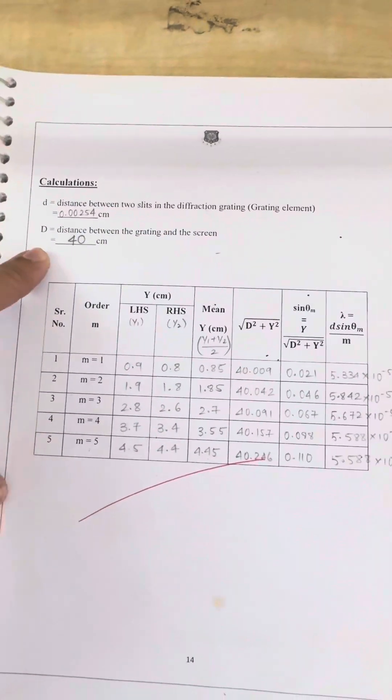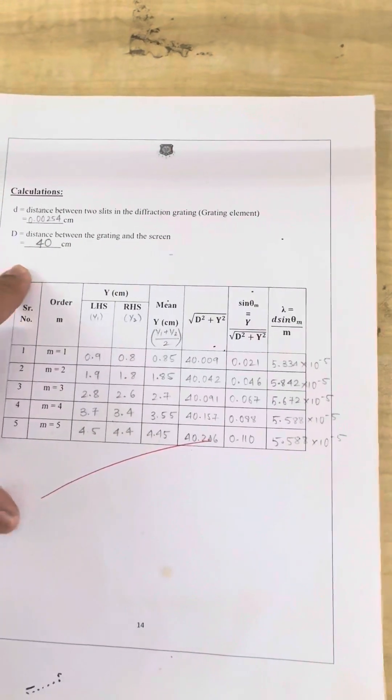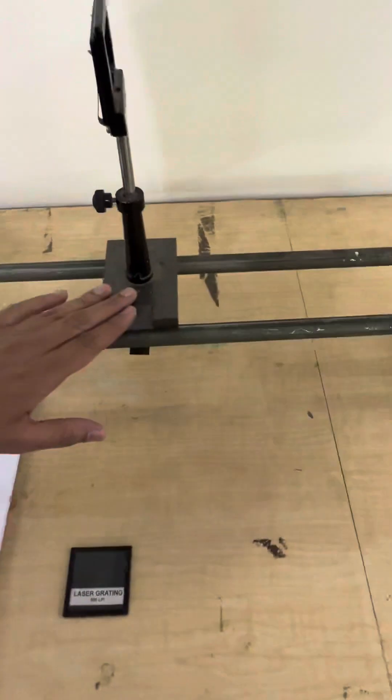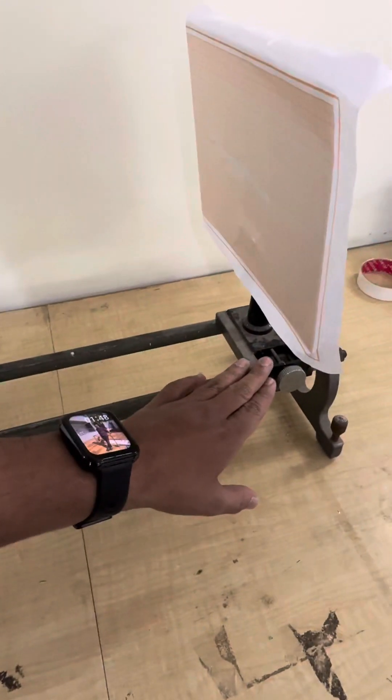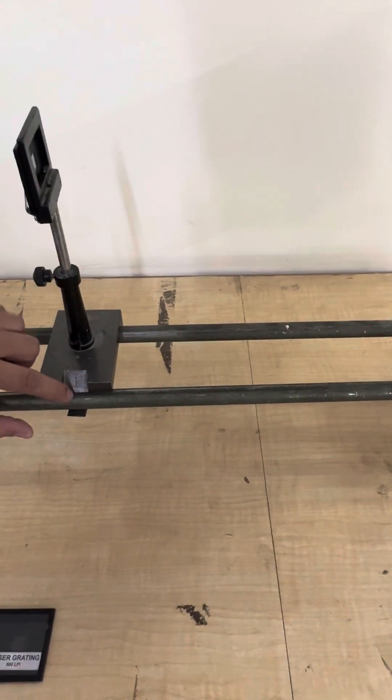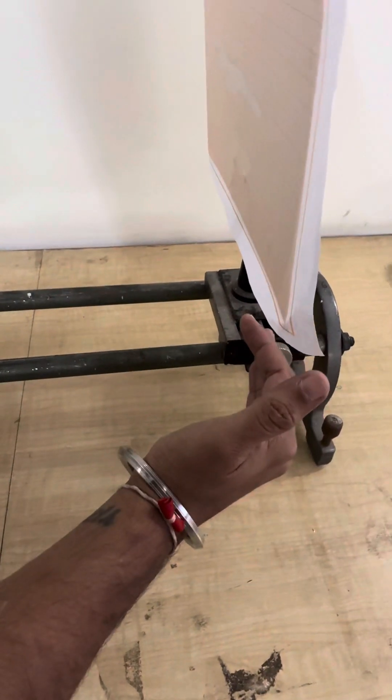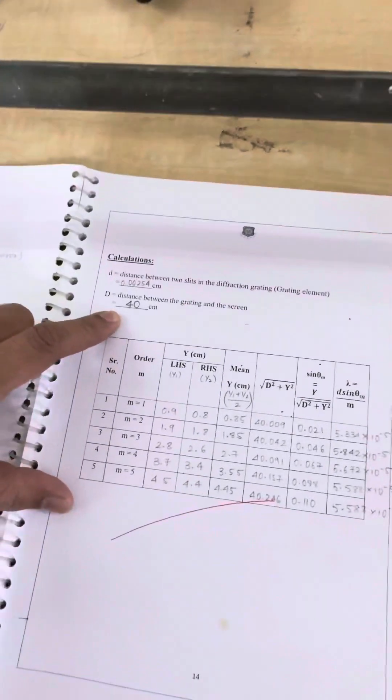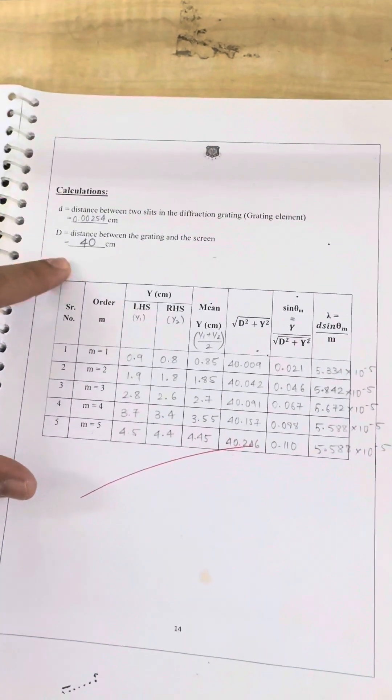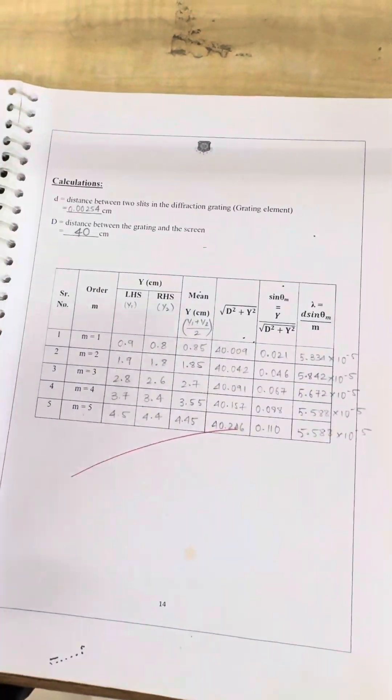Now what is capital D? Capital D is the distance between grating and the screen. So this is the grating element, this is screen. So from the center of this grating element to the center of this screen, we have to measure the distance. So this distance we have measured as 40 cm. This distance is also in cm and it is 40 cm.